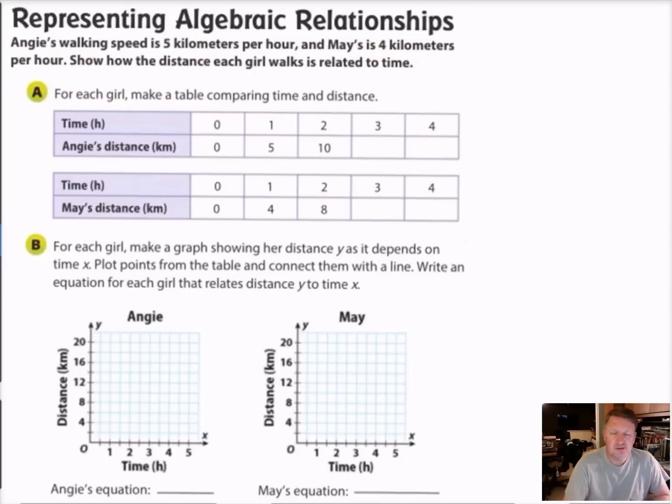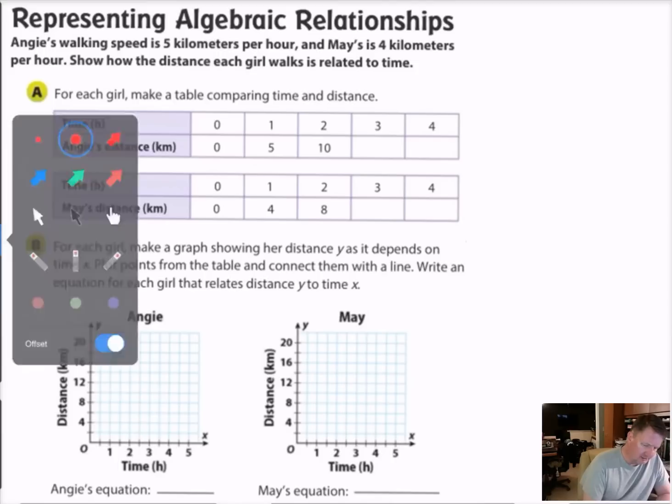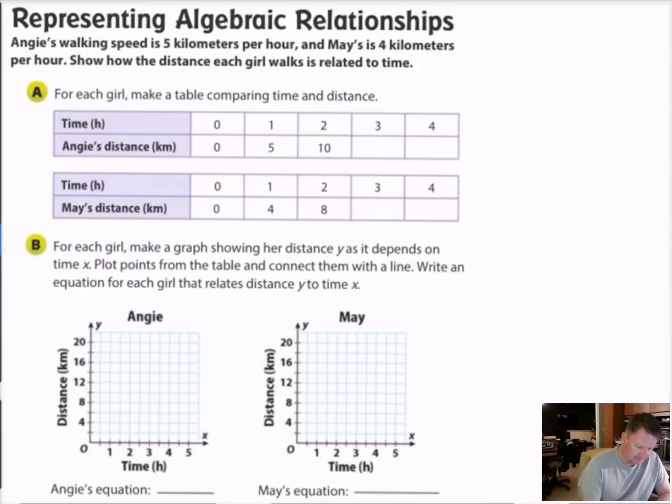First thing we want to talk about is a comparison between two different situations. We have Angie's walking speed is 5 kilometers per hour and May's is 4 kilometers per hour. Show how the distance each girl walks is related to time. Time is our independent variable, but the girl's distance is directly related to how long they walk. So this is the dependent variable. If we wanted to talk about it in terms of X and Y, the time is X and the distance is Y.